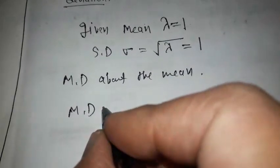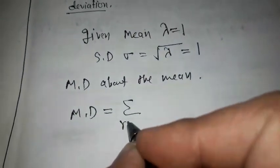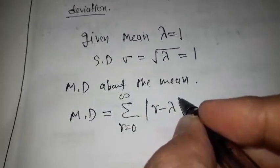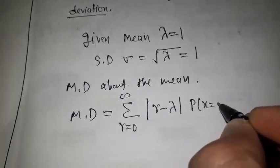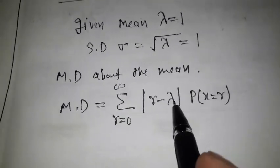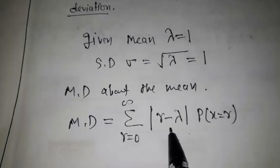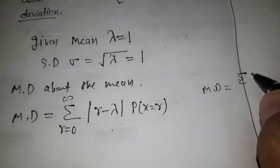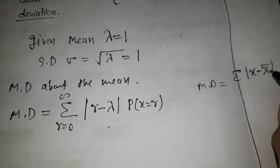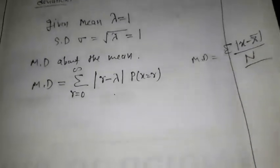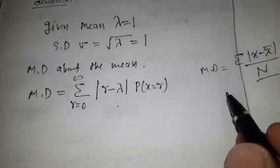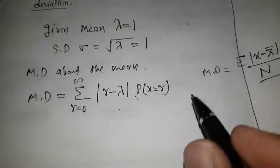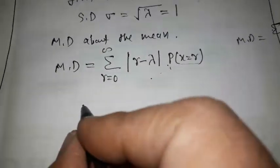Since lambda = 1, the standard deviation sigma equals under root lambda, so sigma equals 1 also. Now the mean deviation about the mean for the Poisson distribution is represented as summation r from 0 to infinity of |r minus lambda| into p(x = r). For a probability distribution, we multiply by the probability rather than dividing by n.